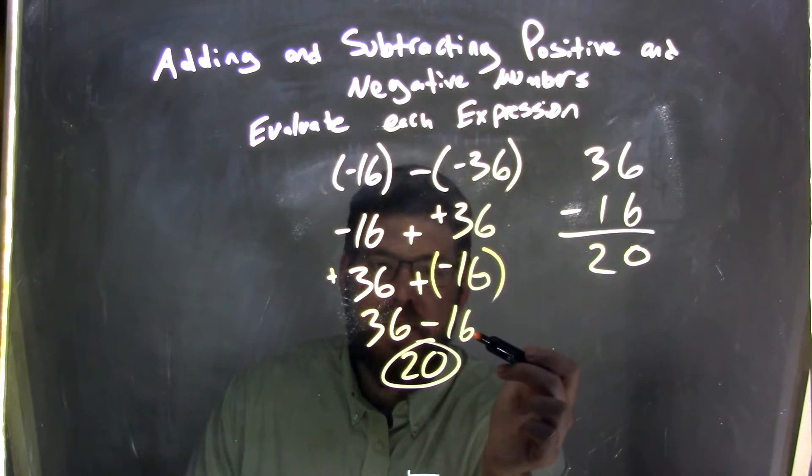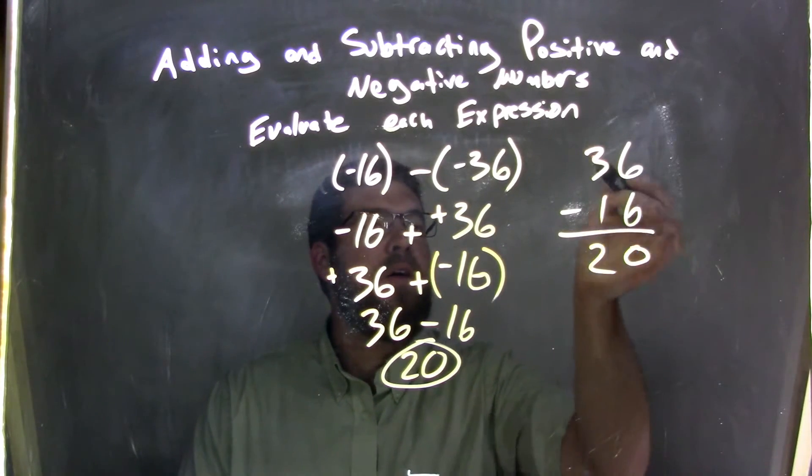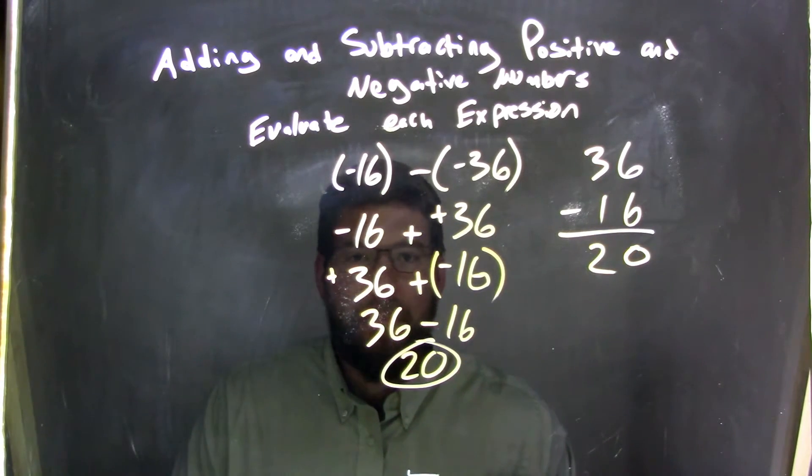Well, 36 minus 16 is just what we found here. 6 minus 6 is 0, 3 minus 1 is 2, 20 being my final answer.